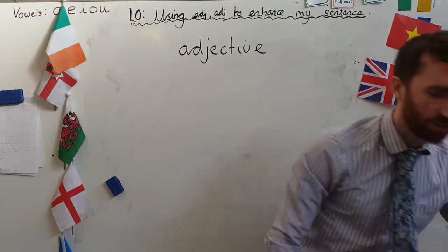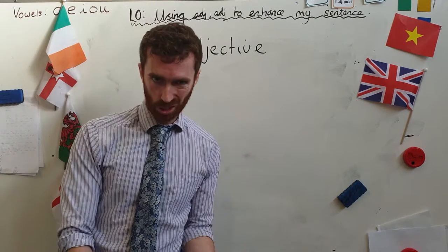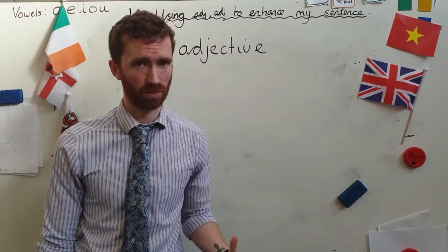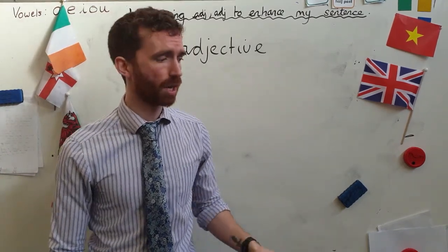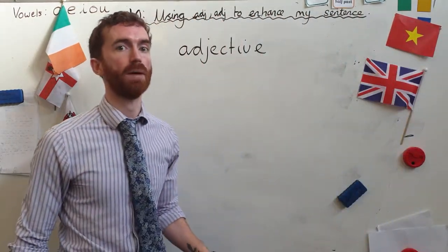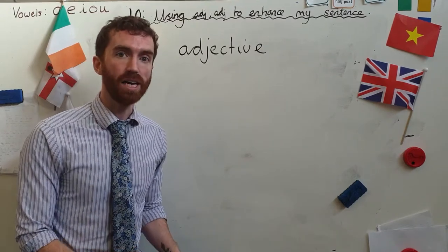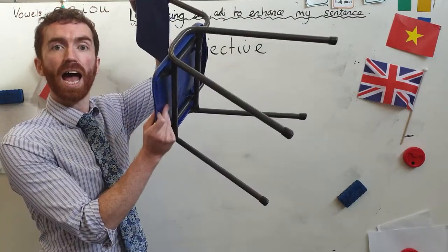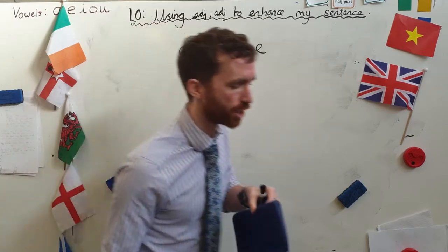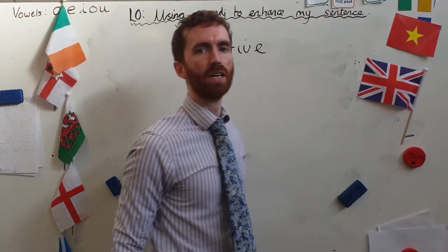It's no good just saying 'chair' because I can't picture the chair. Chairs come in all sorts of different shapes and sizes. Adj-adj would be using two adjectives to describe the chair. So it's not just a chair — it's a small, blue chair. Small, blue chair. Adj-adj. Adjectives are really important for enhancing nouns.